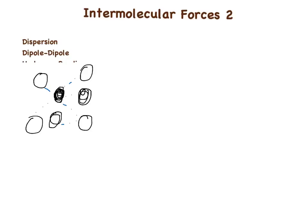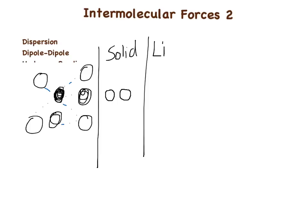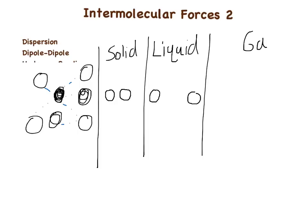Now, everybody knows what a solid, liquid, and gas is. The difference between a solid, liquid, and gas is not what the molecules are, but basically the spacing between them. If we compare a solid, the spacing between molecules would be pretty close. If we go to a liquid, the spacing would be a little bit further. And then for a gas, the spacing between molecules would be a lot further apart.